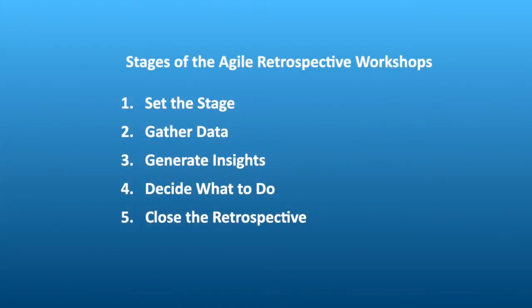Let's remind our audiences of the Agile Retrospective sections, which is seen on the screen now. The first one is Set the Stage. Second, Gather Data. Third section is Generate Insights. Fourth section is Decide What to Do. Fifth section is Close the Retrospective.